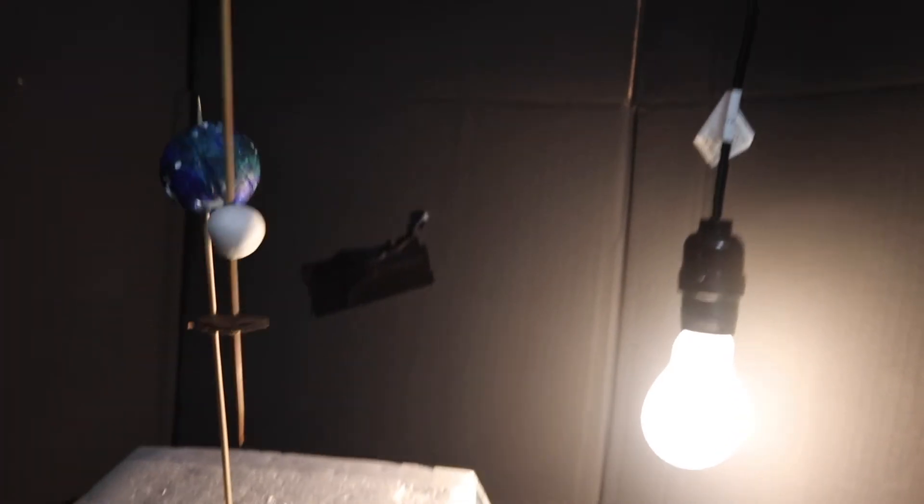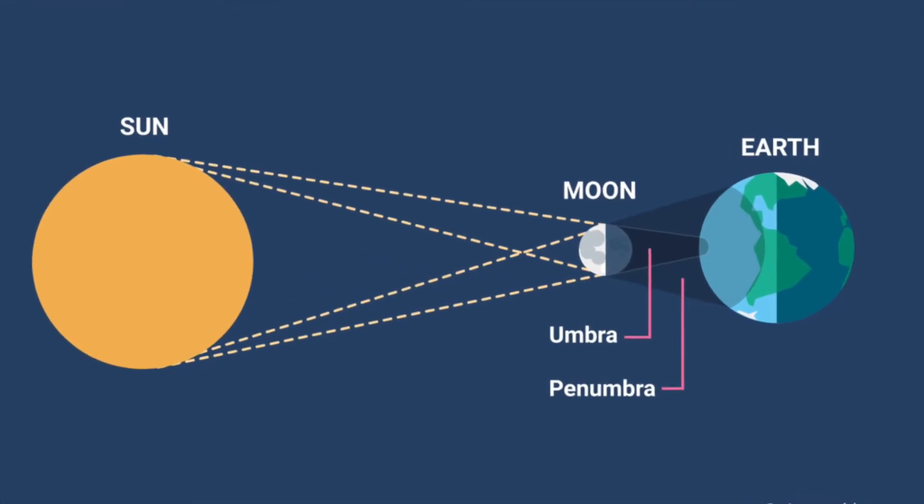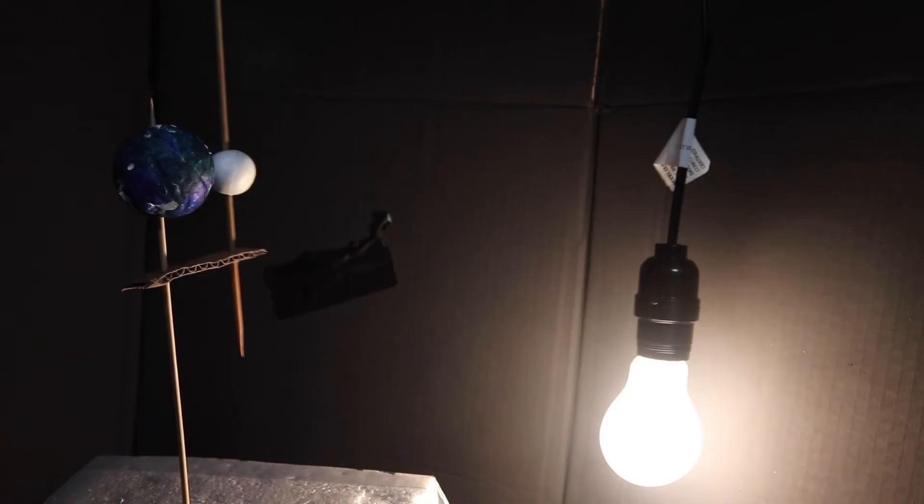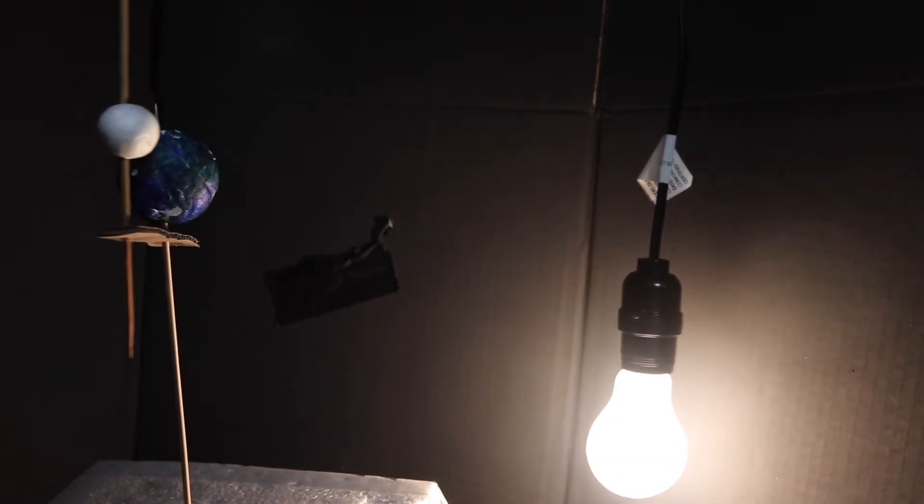A solar eclipse occurs when the moon goes between the Sun and the Earth at the Earth-Sun plane, leaving part of the Earth in darkness because of the shadow of the moon.